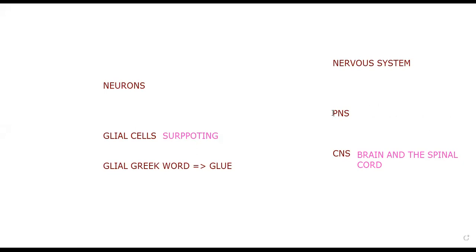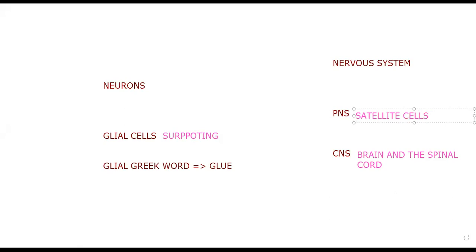Under the peripheral nervous system we have two important cells to remember: satellite cells and Schwann cells.